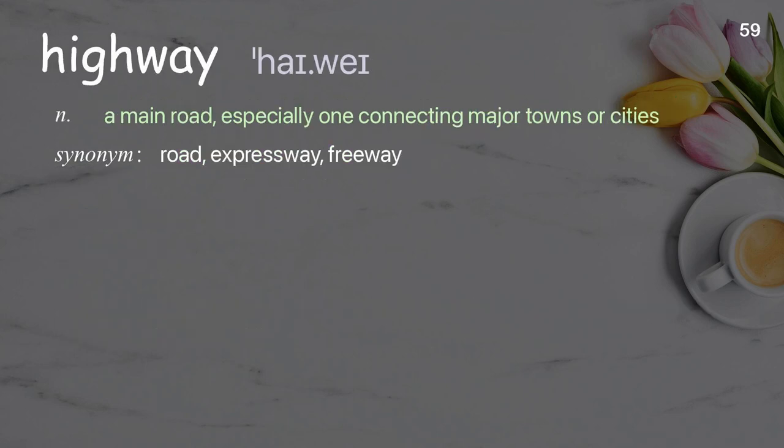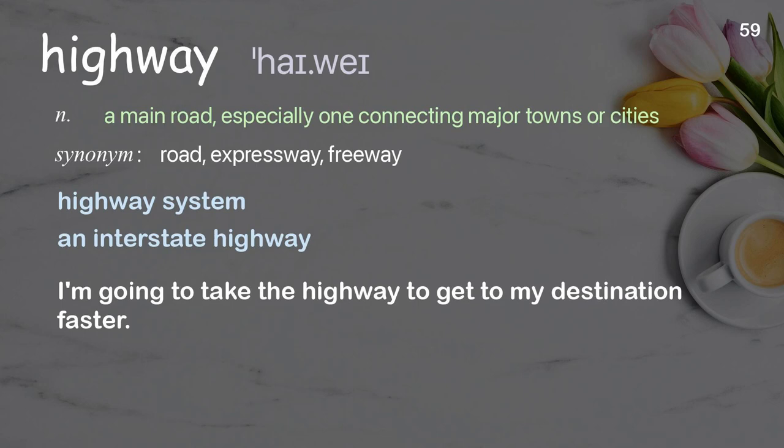Highway: A main road, especially one connecting major towns or cities. Examples: Highway system. An interstate highway. I'm going to take the highway to get to my destination faster.